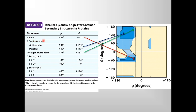For an alpha helix with a phi of minus 57 and psi of minus 47, it falls in this region — this is pretty common for an alpha helix and that is where the Ramachandran plot predicts it. For beta conformation — beta sheets with anti-parallel and parallel sheets, which we'll talk about in a bit — the phi and psi angles are not much different. So they fall in this specific quadrant, that's the left-hand top quadrant.